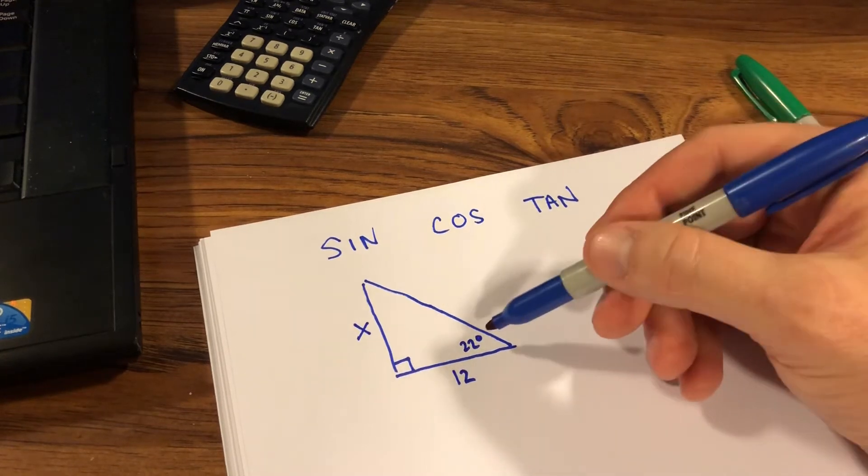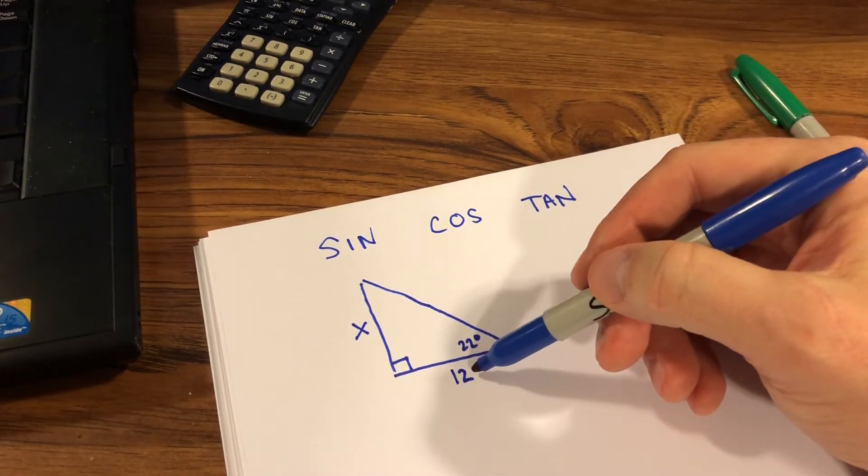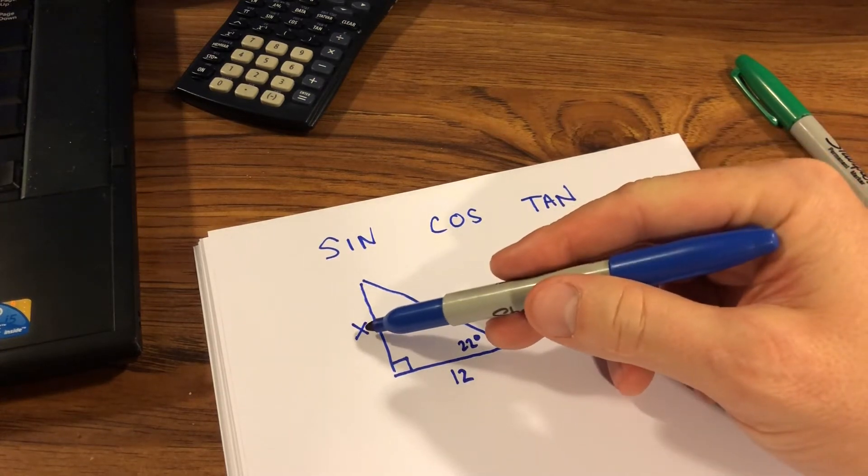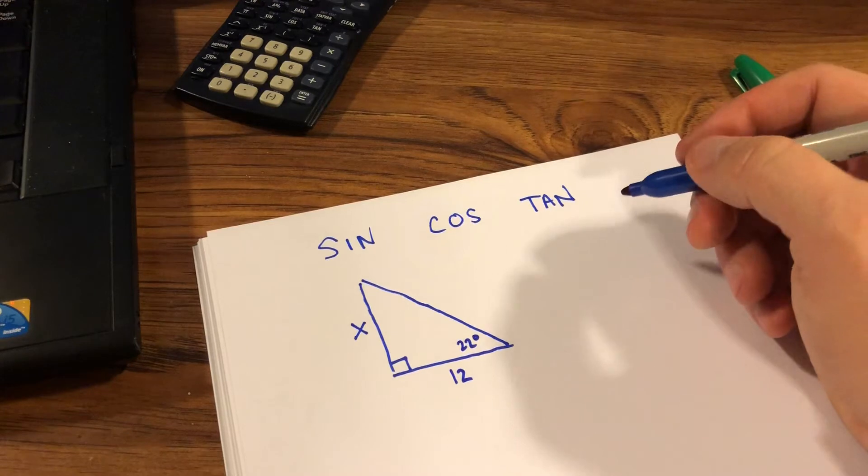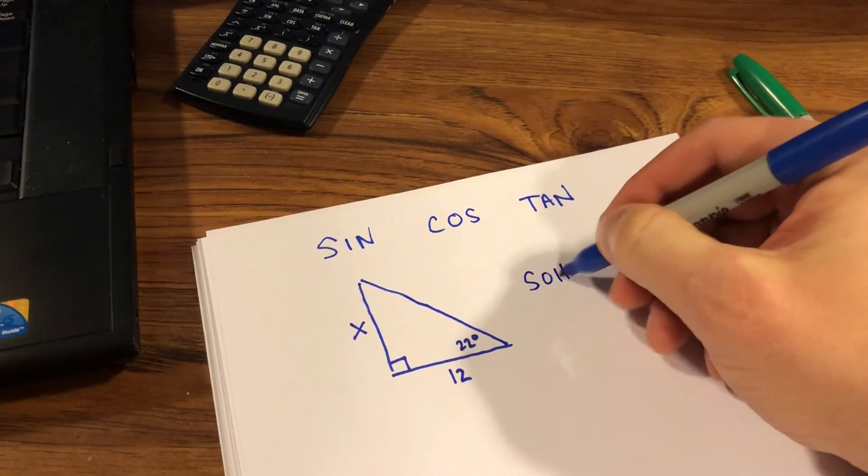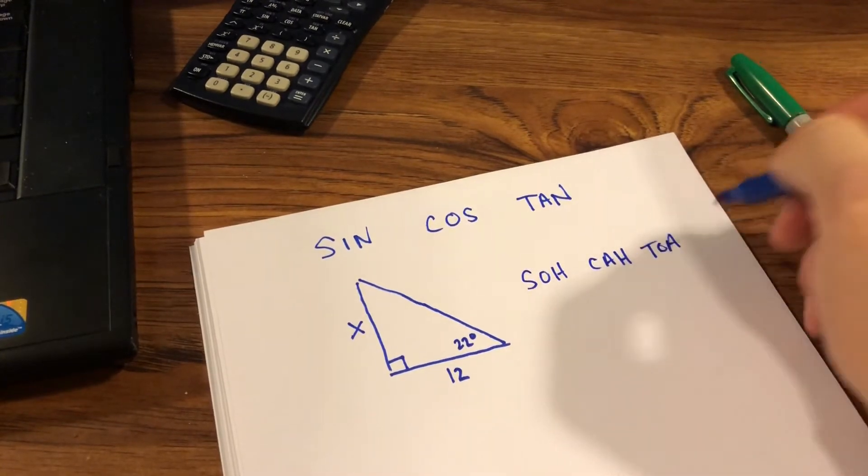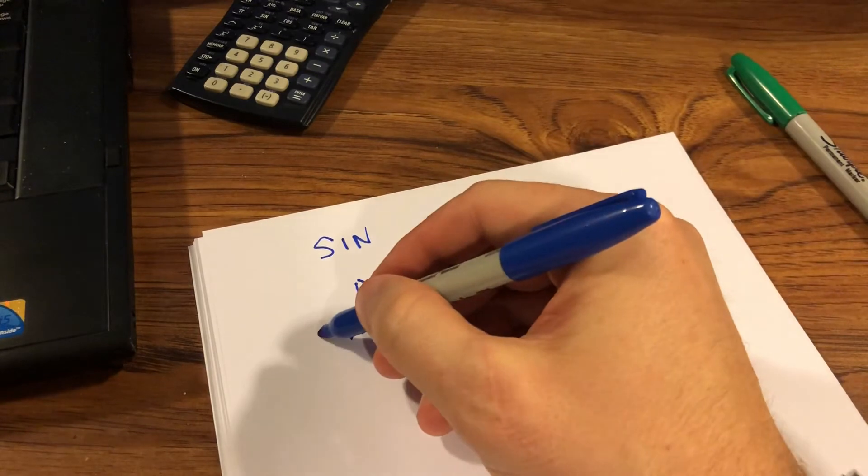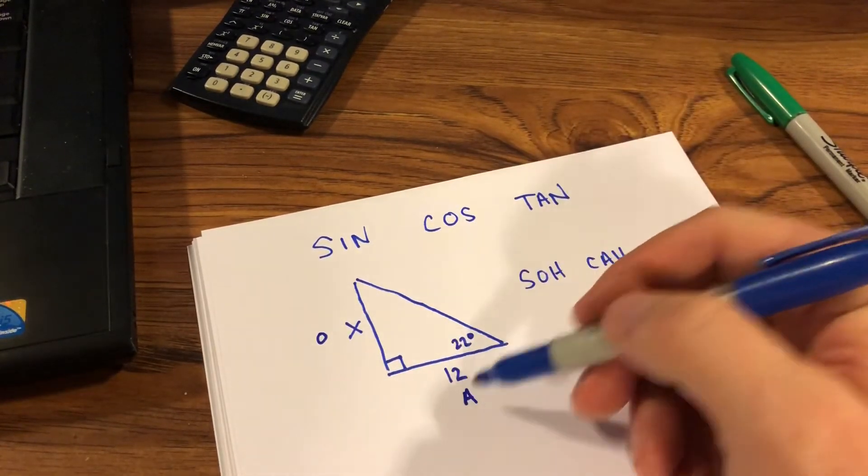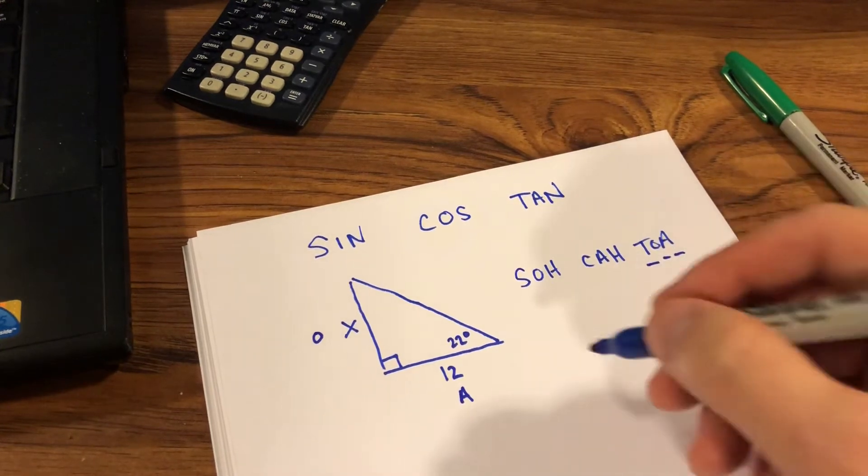I have an angle, I have the adjacent side, and I have the opposite side that I'm trying to find. So therefore, when I go to SOH CAH TOA, in this case since I have the adjacent side and the opposite side, O and A goes with the TOA.